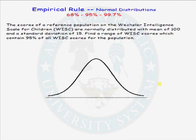Let's see how we can use the empirical rule for normal distributions. The scores of a reference population on the Wechsler Intelligence Scale for Children, WISC, are normally distributed with a mean of 100 and a standard deviation of 15. We want to find a range of WISC scores which contain 95% of all WISC scores for the population.